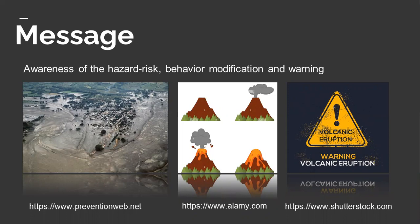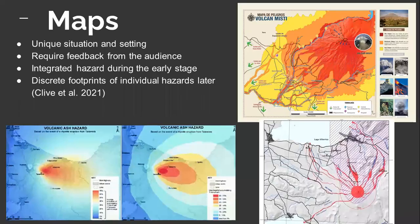Warning messages are released during a volcanic crisis. The maps represent a unique situation and setting. They require feedback from the audience and consideration of interdisciplinary work on visual communication. Integrated hazard zones may help capture audience attention in the early stage as the event evolves, while discrete footprints of individual hazards may help better inform high-stake decisions.